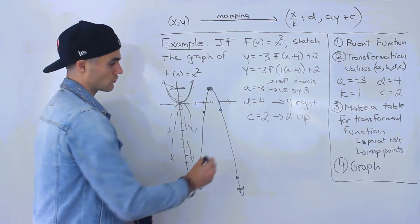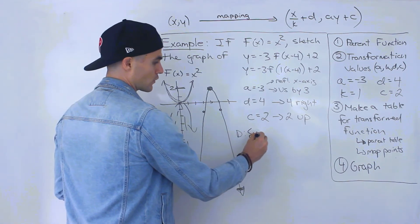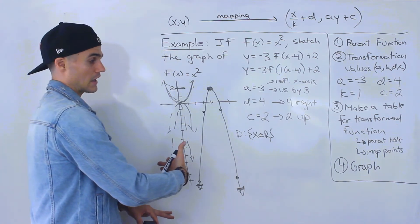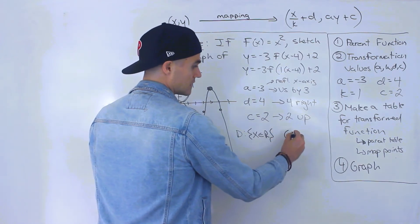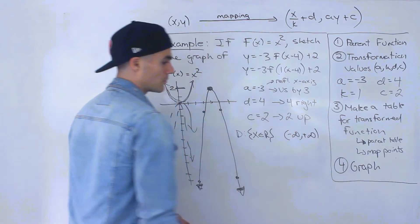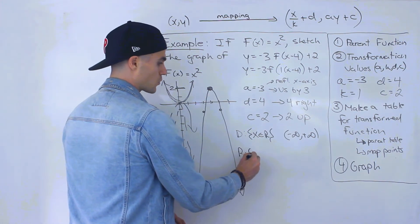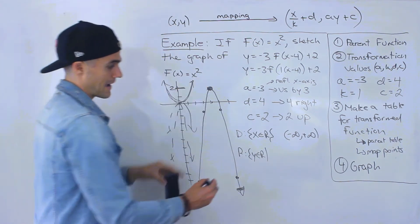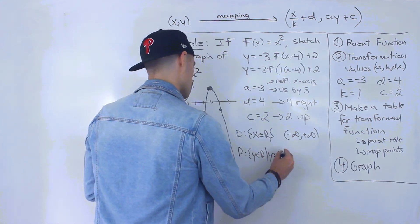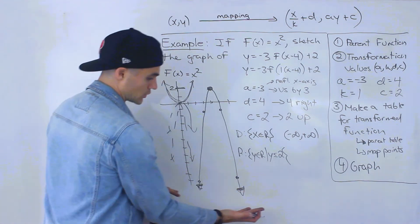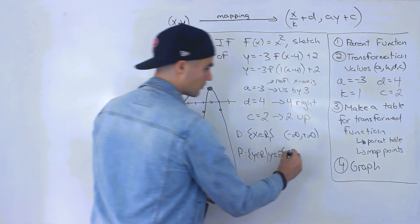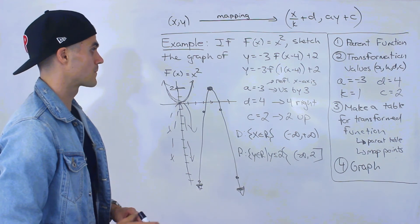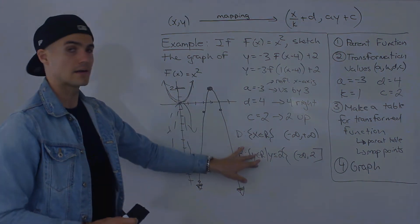For the domain and range: the domain is x ∈ ℝ, since the parabola extends forever left and right — no restriction on x values. In interval notation, that's negative infinity to positive infinity. The range is y ∈ ℝ where y is less than or equal to 2, because (4, 2) is the maximum vertex. So the y values go from negative infinity to positive 2, inclusive — written with a square bracket at positive 2.